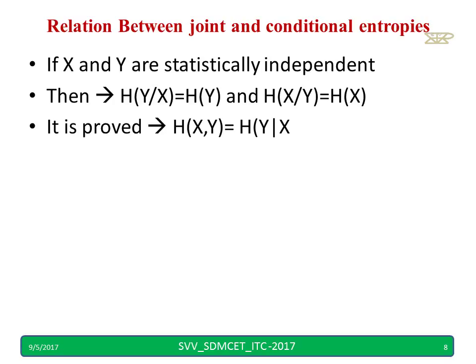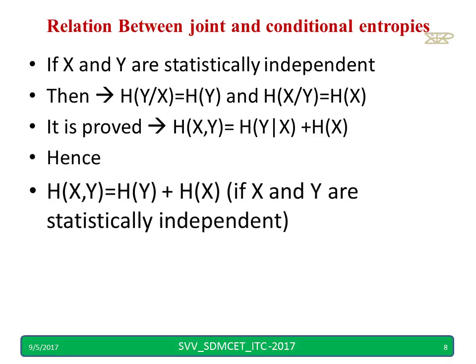Now, it is proved that H(X,Y) is equal to H(Y|X) + H(X) in the previous slide. Simply, I am replacing it by H(Y) because both are statistically independent.